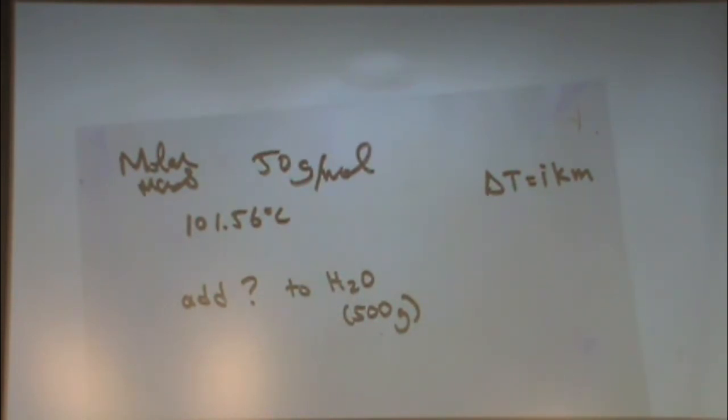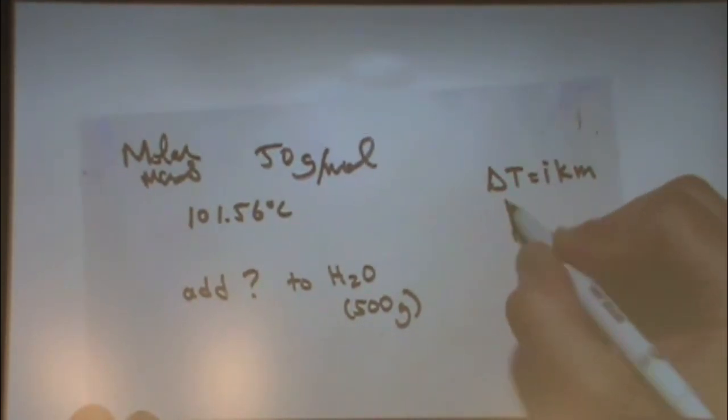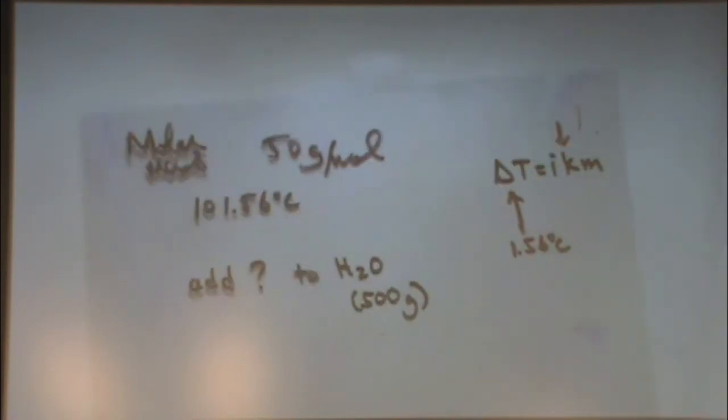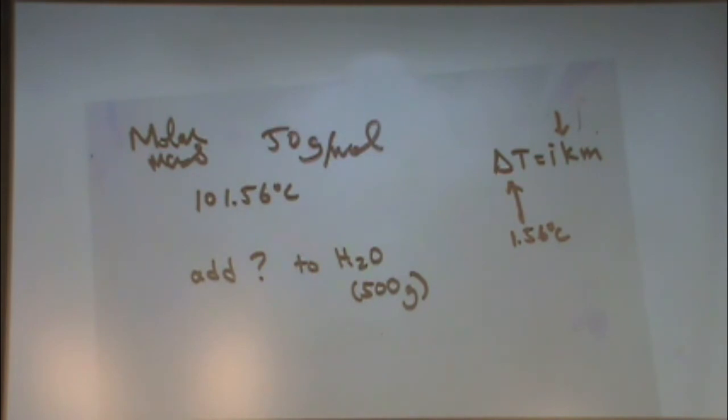Knowing that, I know a couple pieces of information already. So for example, delta T is going to be what? It's going to be 1.56 degrees C. The reason I know that is compared to water, which is 100. So delta T is for the solvent, the solvent, which is water. I actually know K as well. K is for what substance? The solvent. Since it's not in the problem, it would have had to be given on the exam that year.